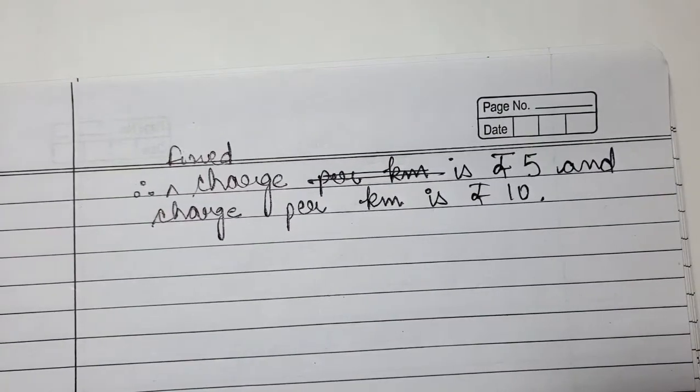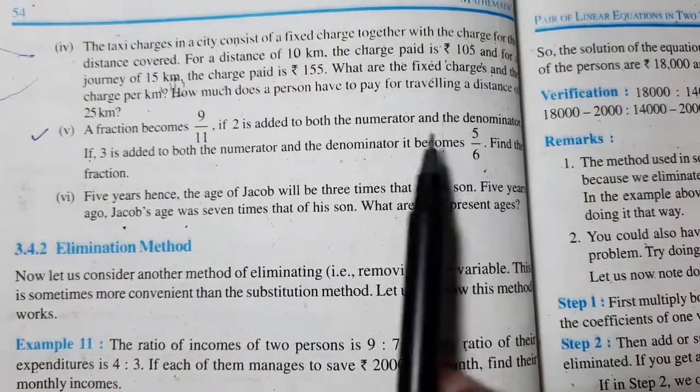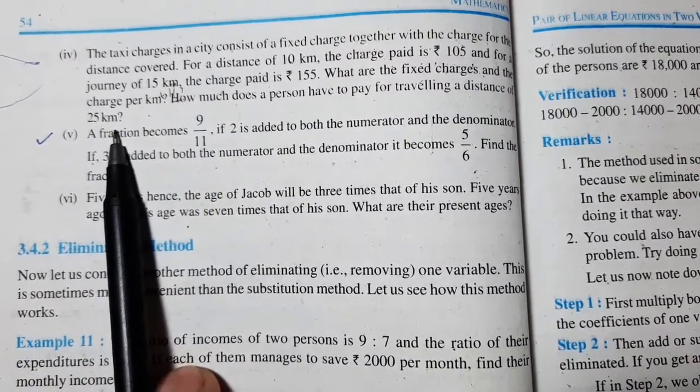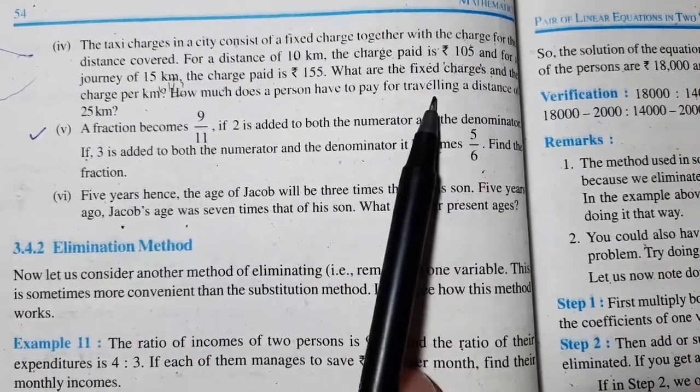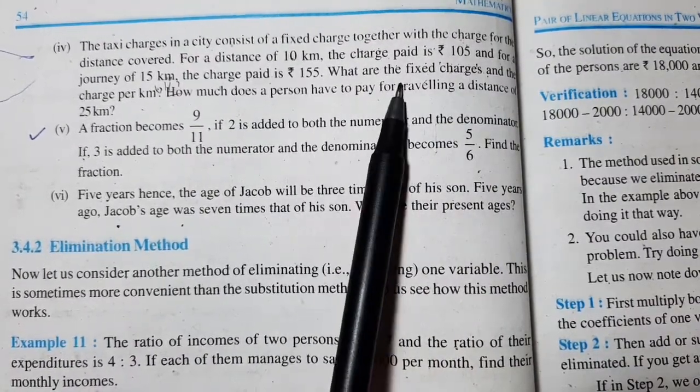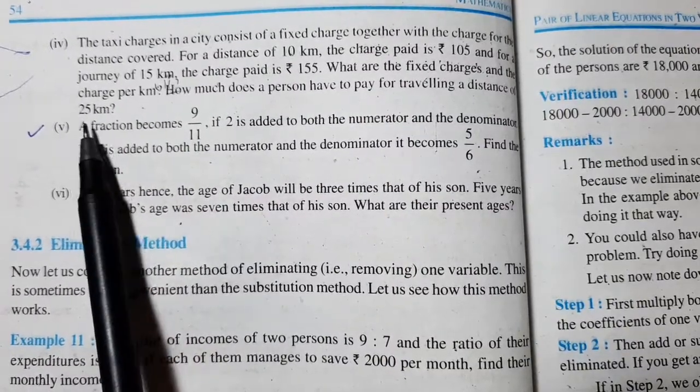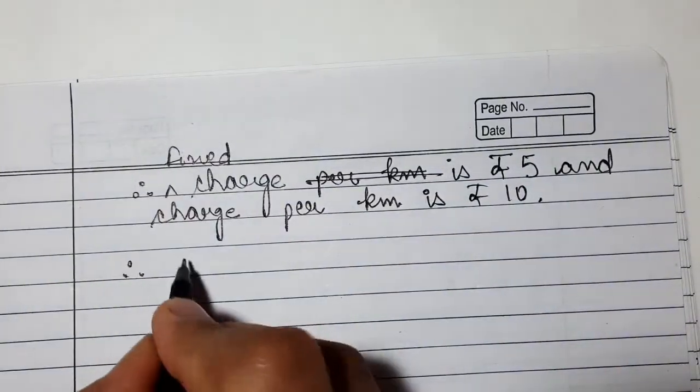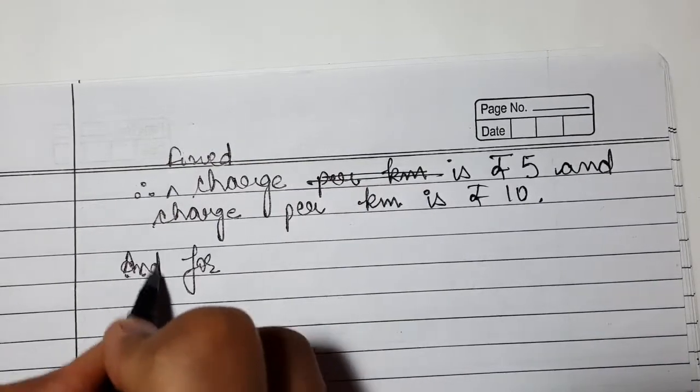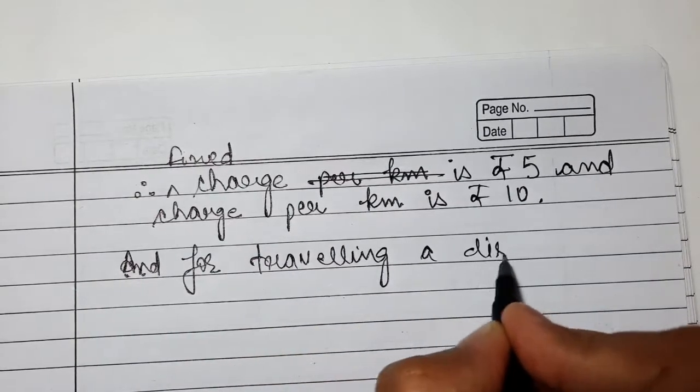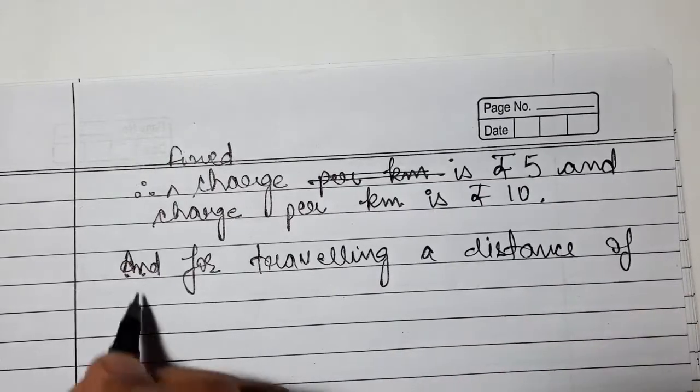How much does a person have to pay for traveling a distance of 25 kilometers? If a person has to cover 25 km distance, how much will they have to pay? They'll have to pay the fixed amount plus charge per kilometer. We've already found fixed amount and charge per kilometer.